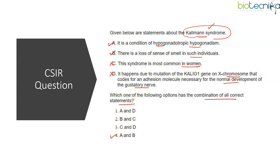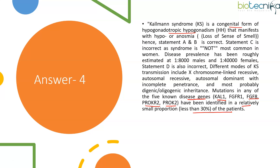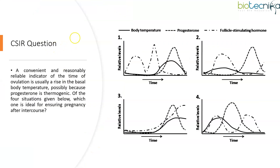You need to know about various diseases and syndromes associated with hormonal imbalance — either due to underproduction or overproduction of a particular hormone. Now let's move to the next question from the reproductive system, specifically the female reproductive cycle. This is a graph-based question. The question states: a convenient and reliable indicator of ovulation is a rise in basal body temperature, possibly because progesterone is thermogenic. Which situation is ideal for ensuring pregnancy after intercourse?